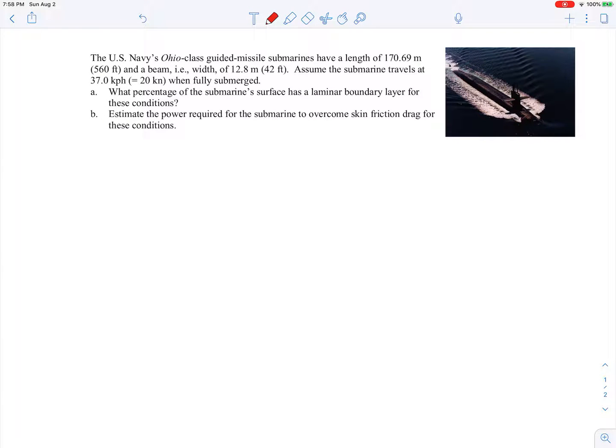In this example we're told we have an Ohio class guided missile submarine with a length of 170 meters and a beam or width of almost 13 meters. We're told the speed that the submarine travels when fully submerged. We're asked in part A to find what percentage of the submarine surface has a laminar boundary layer for these conditions, and part B is to estimate the power required for the submarine to overcome skin friction drag for these conditions.